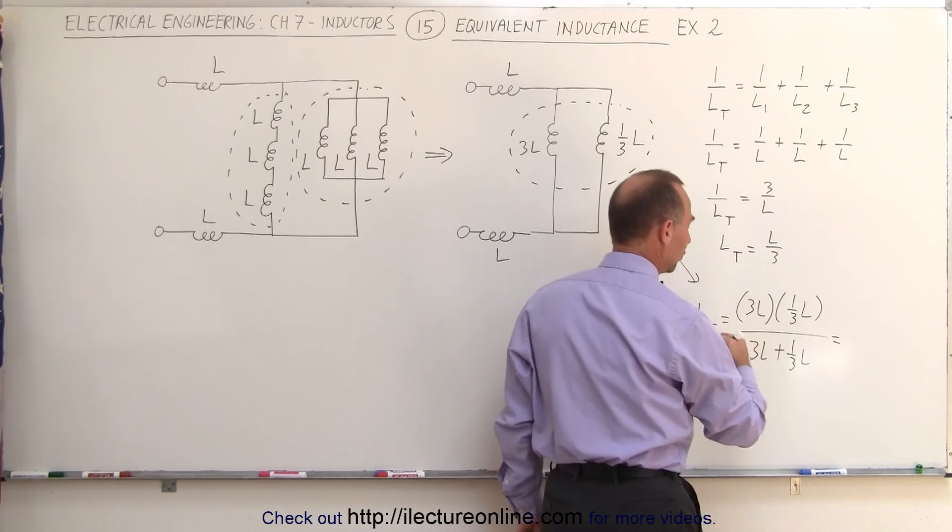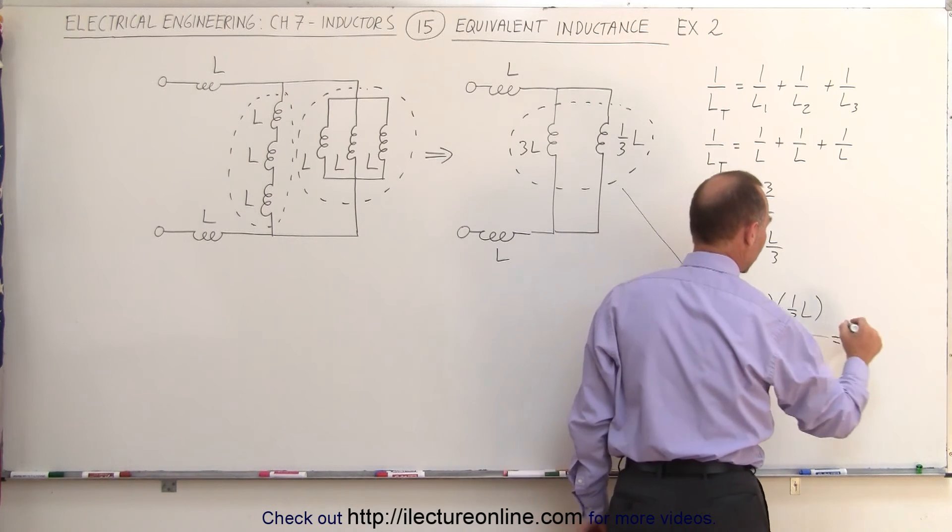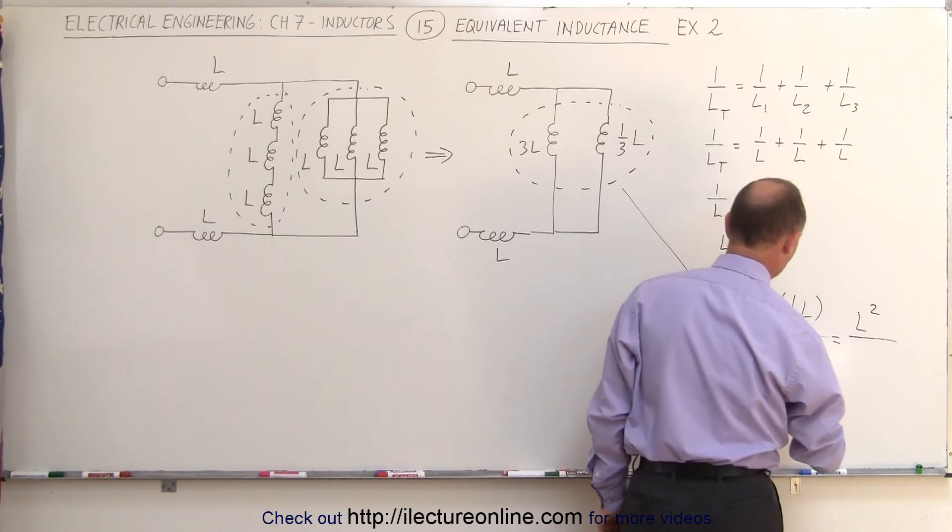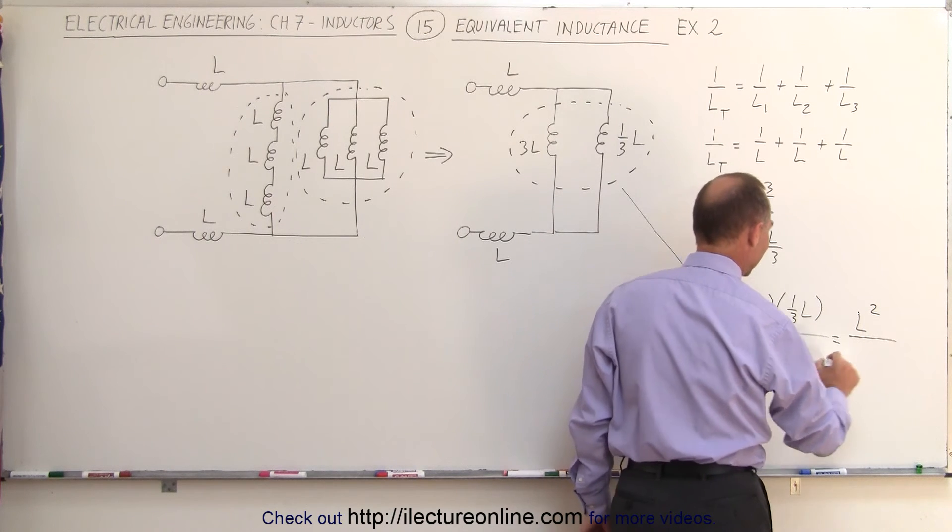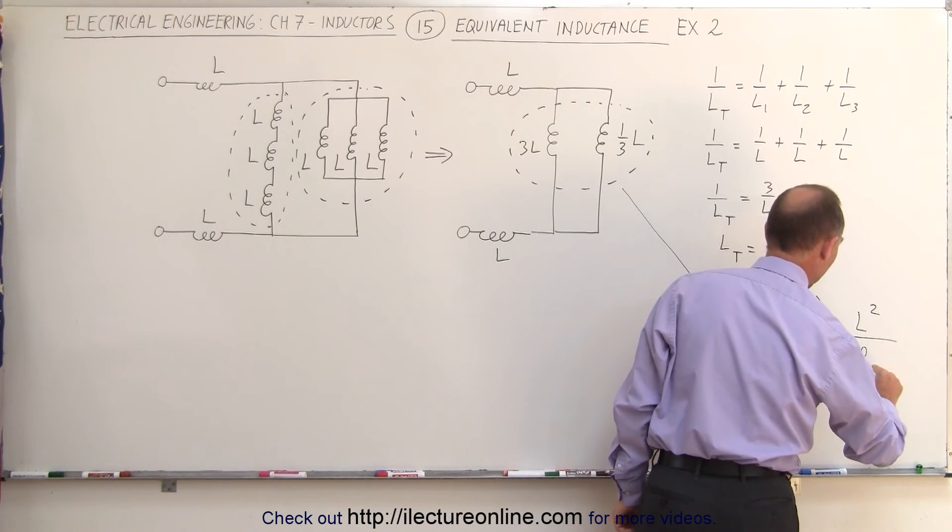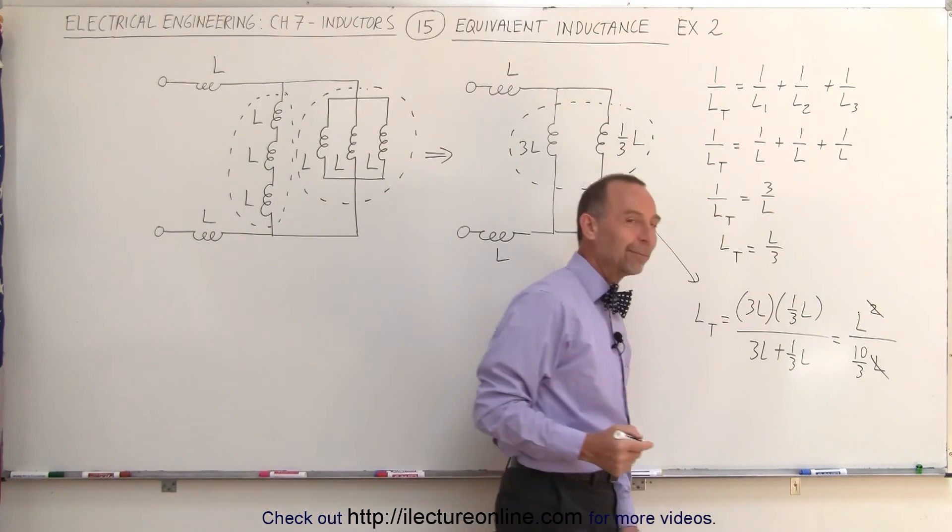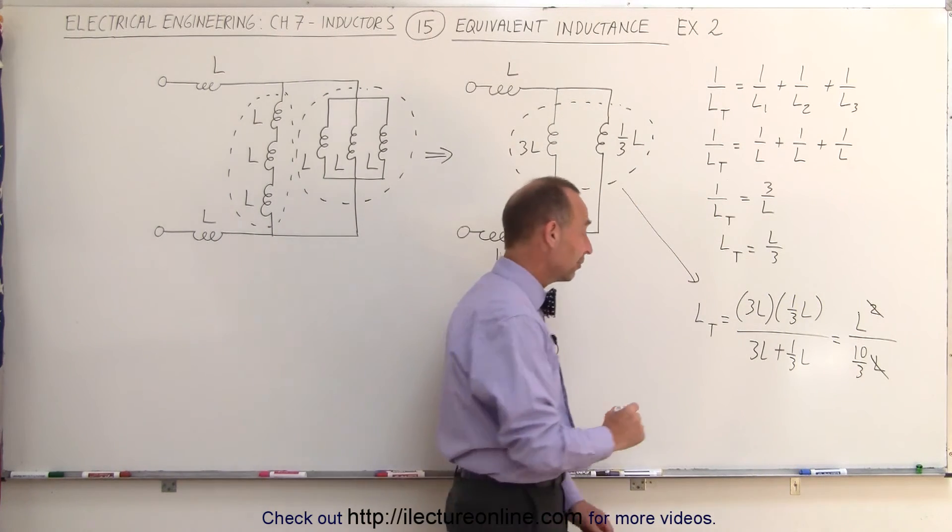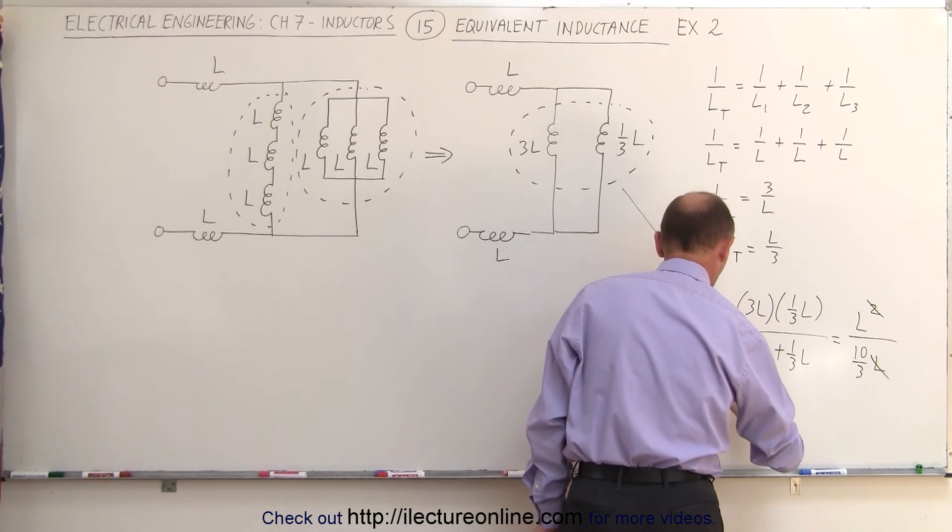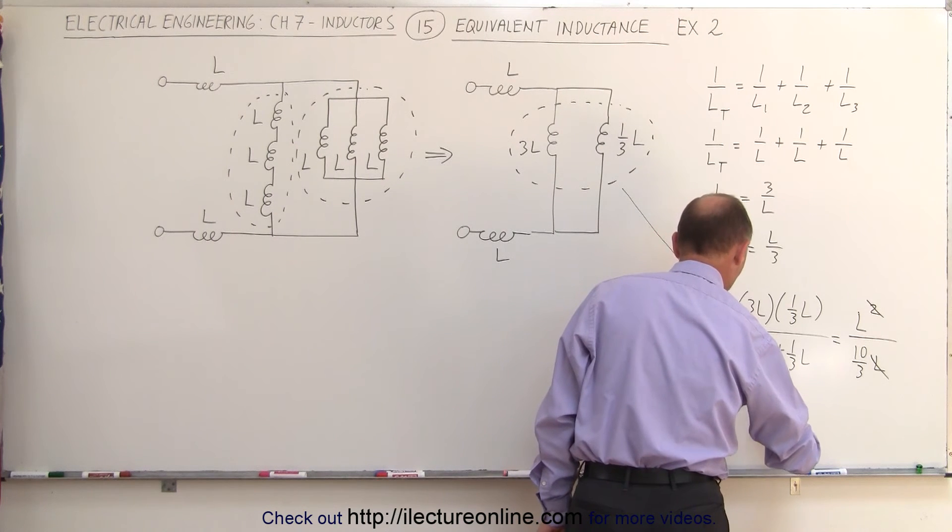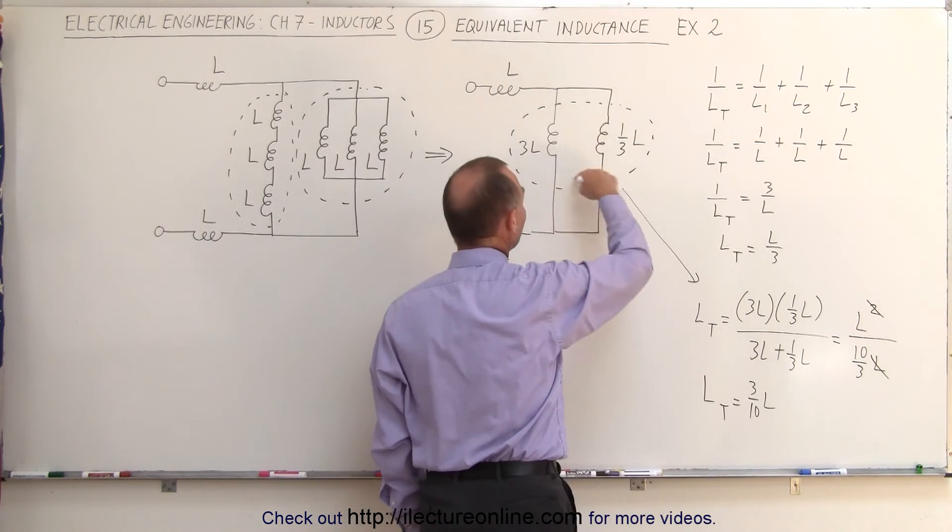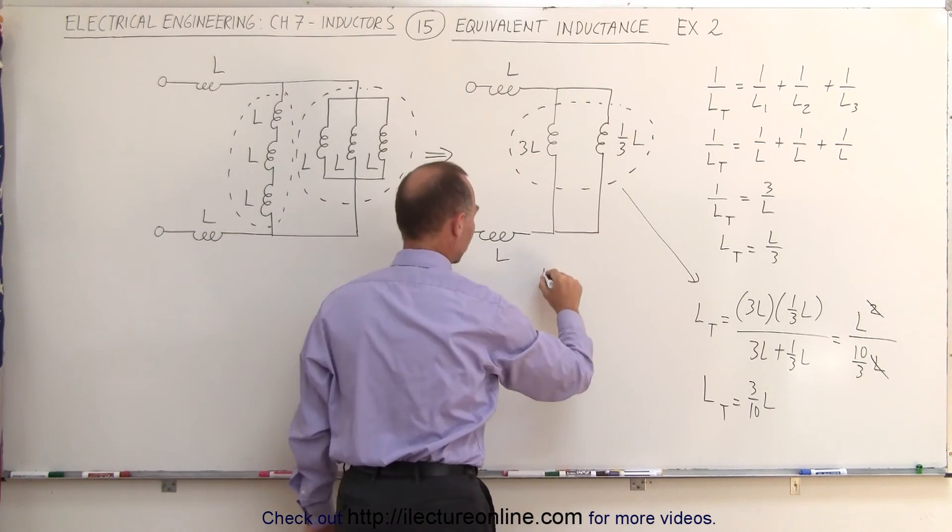So in the numerator, three times one third is one. We get L squared divided by the denominator, three plus a third, that would be ten thirds L. This L cancels out that L when you divide by a fraction, the same as multiply by the inverse, which means L total equals three tenths L for the equivalent of these two inductors.